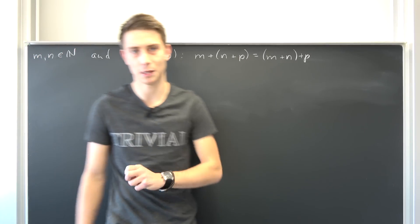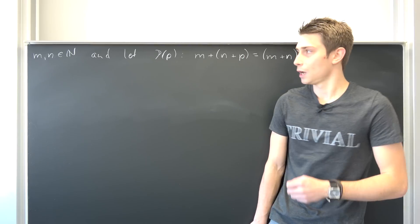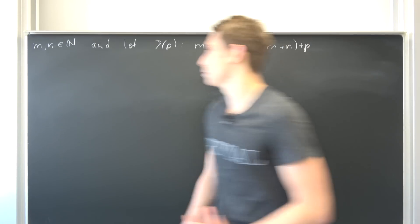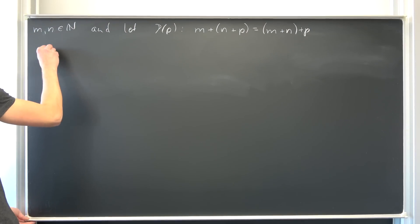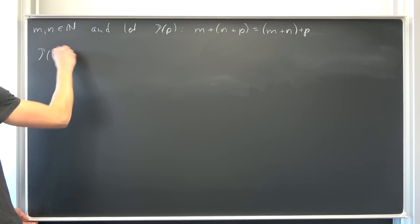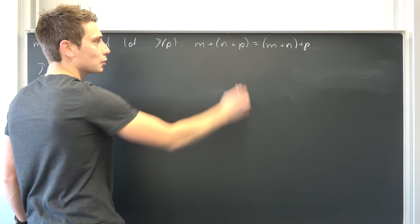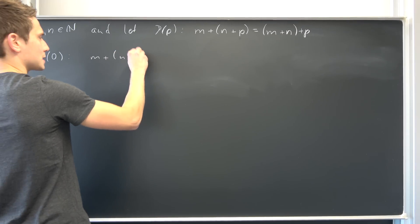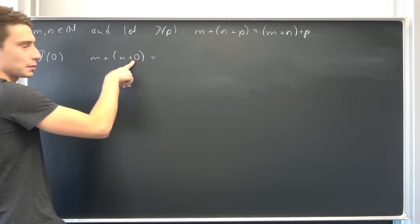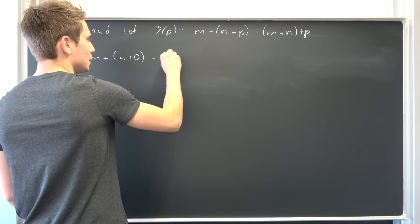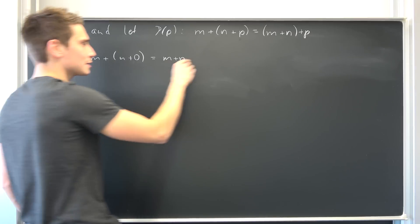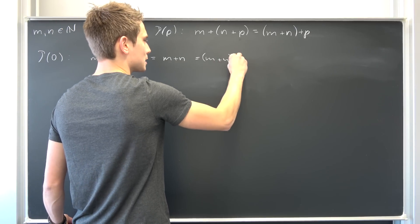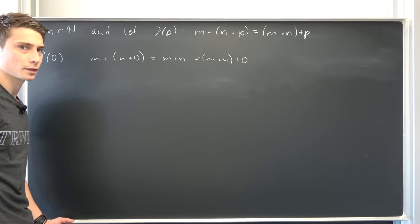As always, we are going to make use of the principle of mathematical induction. Our proposition: we take some n and m fixed as arbitrary natural numbers — that's our proposition P(p) — and we want this to hold for all natural numbers. P is our dependent variable. So let's get started with the base step P(0). P(0): we plug 0 in, so we have m + (n + 0). By the first rule of addition, this is nothing but m + n, which equals (m + n) + 0.